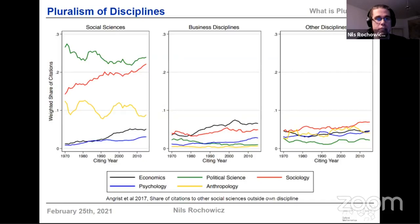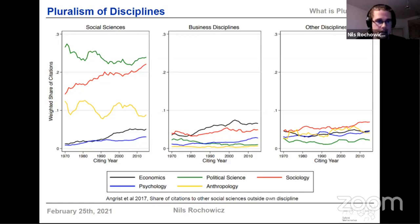Last but not least is a pluralism of disciplines that economics should interact with. As a data point: the black line in the left panel describes, for an average economics paper, what fraction of its citations go to other social science disciplines. Economics is, first of all, relatively low in absolute terms — only about 5% of its citations go to other social sciences — and compared to disciplines like political science, anthropology, and sociology, economics is lagging far behind in how much it interacts with other social sciences.